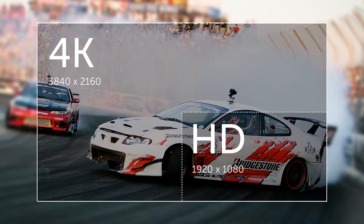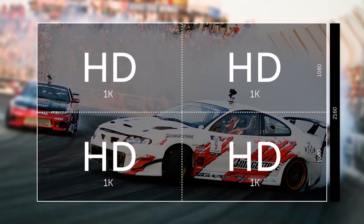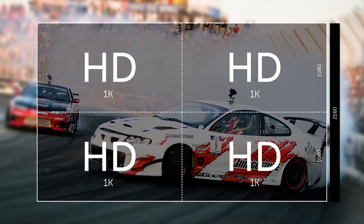There's some confusion about why it's called 4K. One theory is that it stands for four 1K screens — 1080 is roughly 1000, so 1080p equals about 1K, and four of them equal 4K.